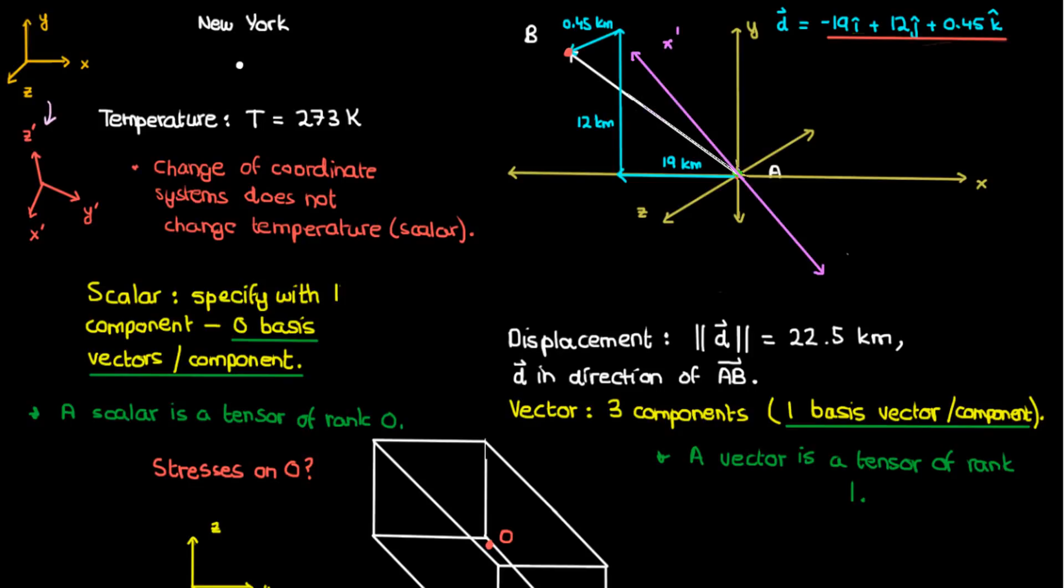But what happens if I change my coordinate system to x prime, y prime, and z prime like this? Well, my displacement in the new coordinate system will change. It'll become more like 22.4i prime plus 0j prime minus 0.45k prime, where i prime, j prime, and k prime are the unit vectors in the new primed coordinates. So changing the coordinates does change the way that I end up writing the vector, but does it change the vector itself?